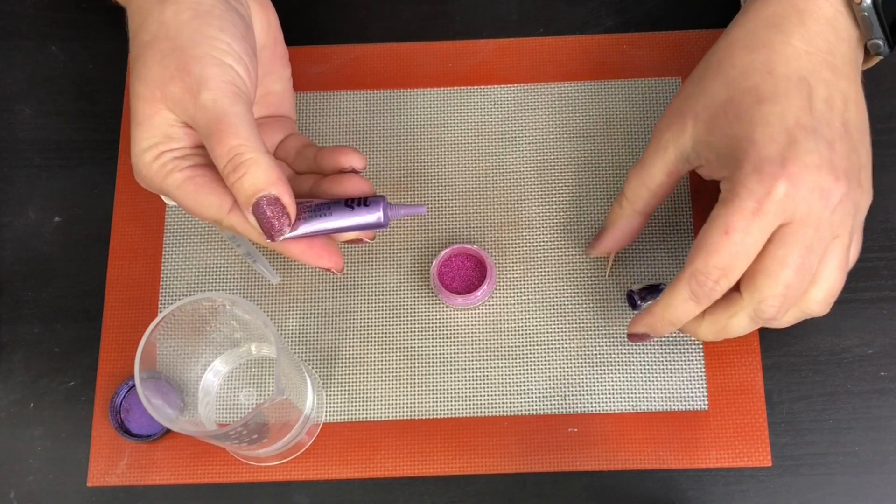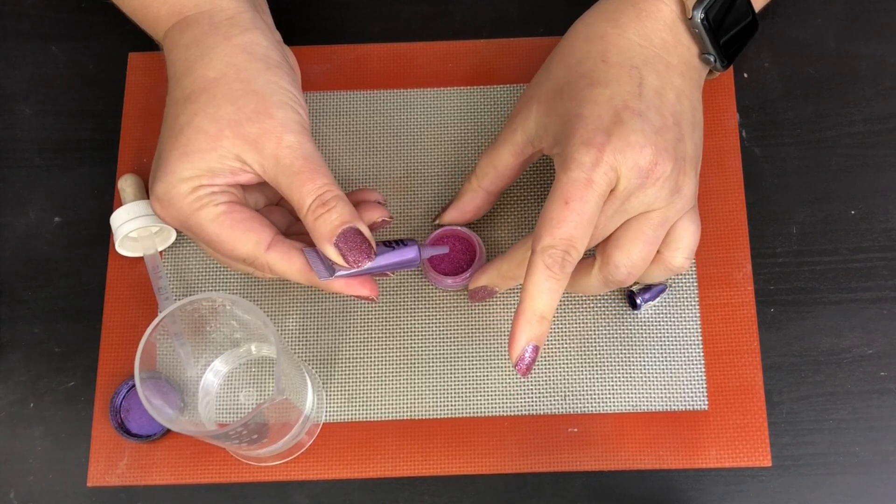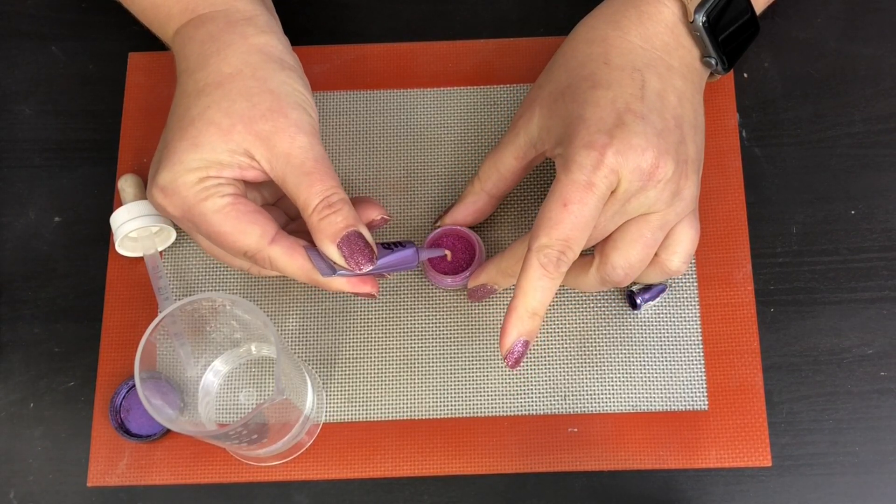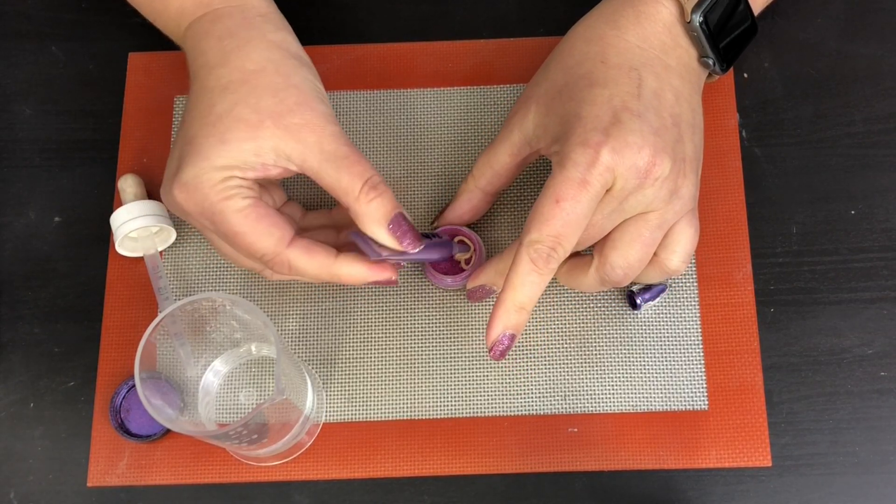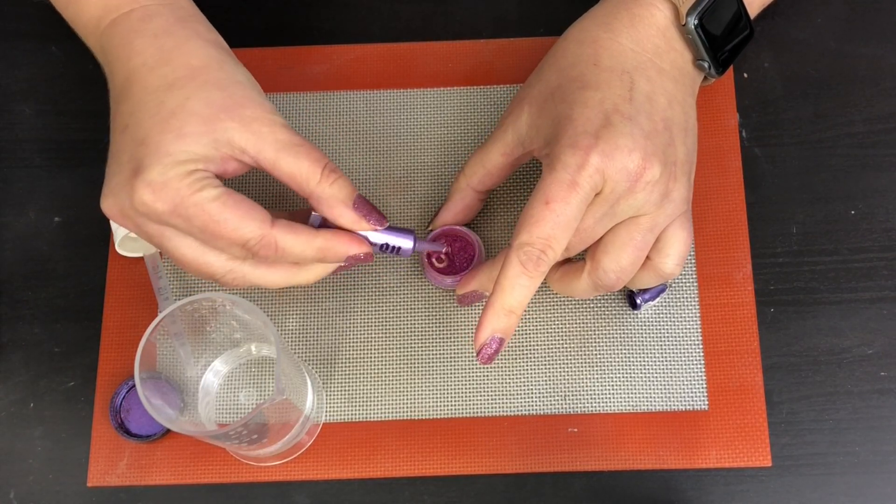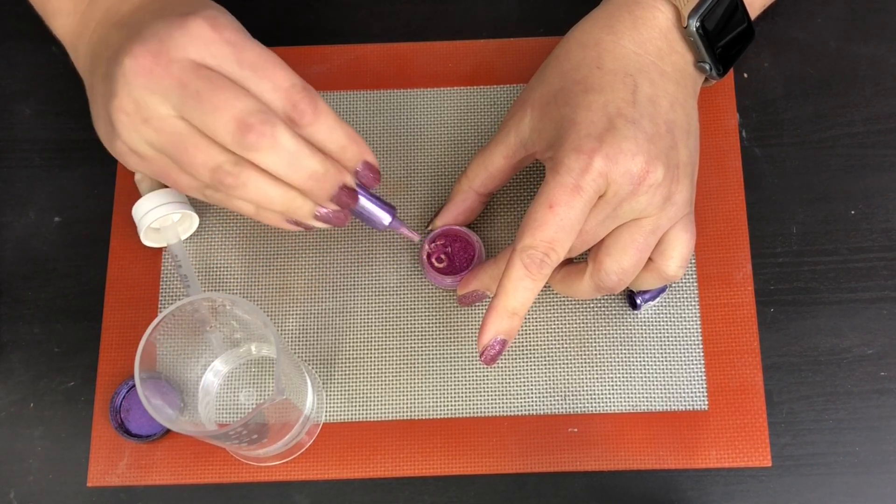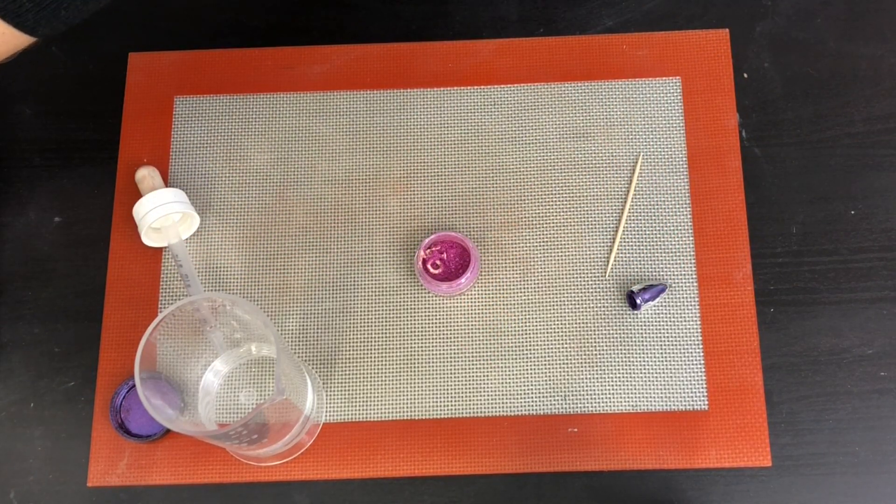So what I'm going to do is I am going to start with a little bit of eye primer. You can use whatever you want. I'm just going to be using the Urban Decay Primer Potion, the original formula. I'm going to put a little bit of that in there, or I'm going to drop it in there. Not intentional, this is not part of the intended show.